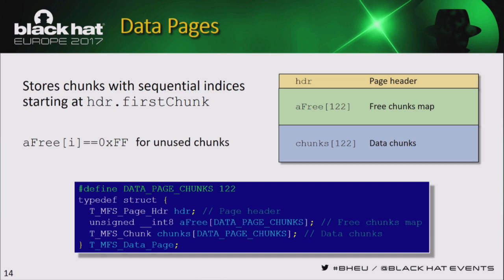Data pages are simpler. They contain 122 chunks and an array of bytes serving as occupancy marks — initially filled with 0xFF, dropped to zero when a chunk is stored. The page header contains the index of the first chunk stored in that page. When you know a data chunk index, you find the proper page, find the offset within that page, check the free elements array, and extract the data. It's a very easy operation.